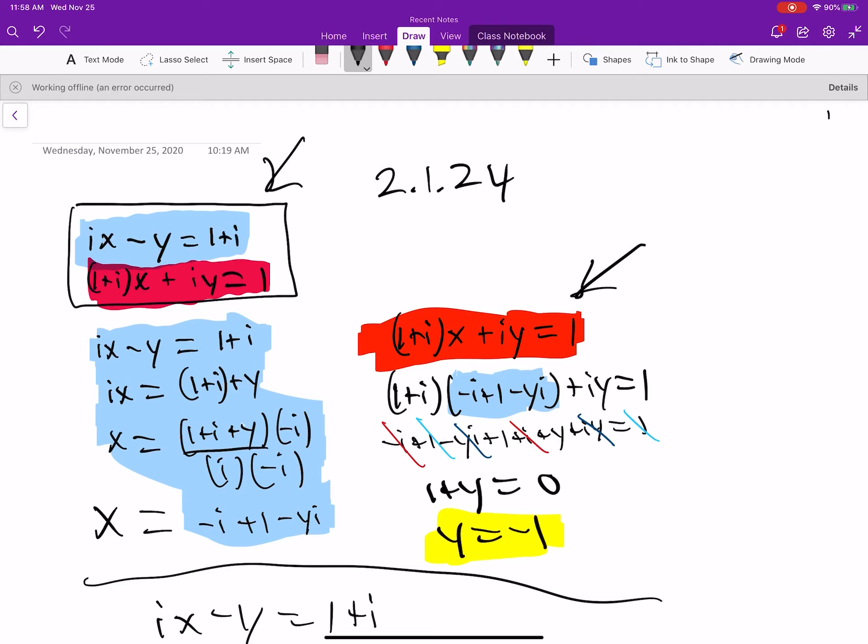So what I do from there is I just cancel out. There's a whole lot of canceling. We find out that y is negative 1.